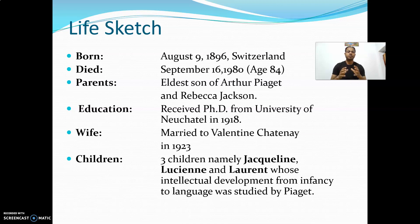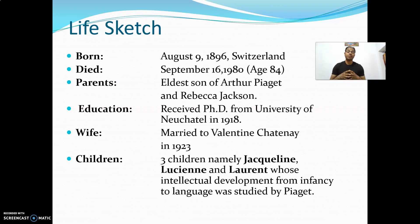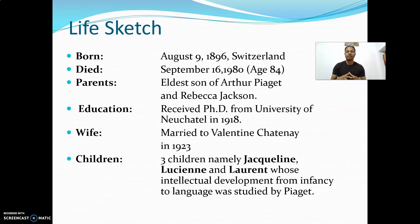He found out the stages of cognitive development through observations of Jacqueline, Lucien, and Laurent. He was basically a developmental psychologist, but he also had a keen interest in biology and philosophy, so he was otherwise known as a genetic epistemologist. At the age of 11, he published a paper in a national journal, taking as his subject an albino sparrow. Albino refers to an organism in which, due to gene mutation, morphological or genetic features change.